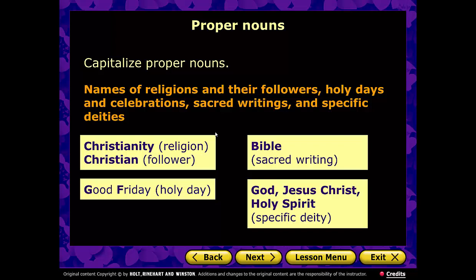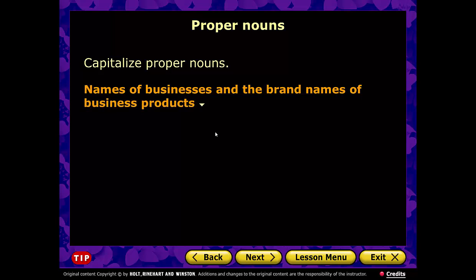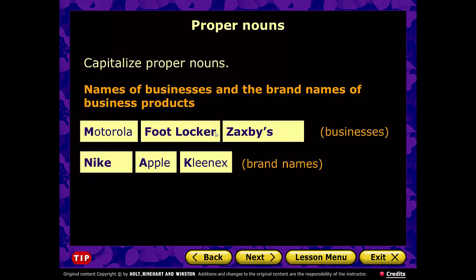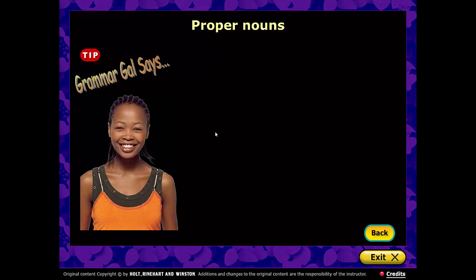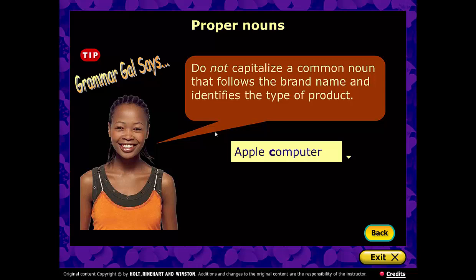Businesses and brand names of business products are proper nouns: Motorola, Foot Locker, Zaxby's, Chick-fil-A, Nike, Apple — meaning the computer, iPhone, etc., not the fruit — and Kleenex, which is actually a brand name for what generically is tissue. Grammar Girl's tip: do not capitalize a common noun that follows a brand name and identifies the type of product. So: Apple computer, Schwinn bicycle, Callaway golf club — only the brand name is capitalized, not the product type.